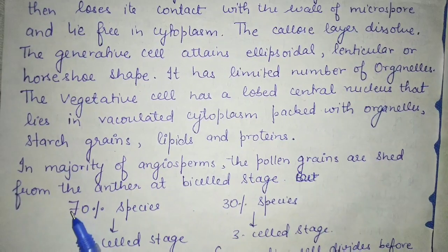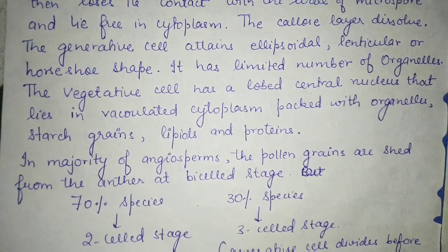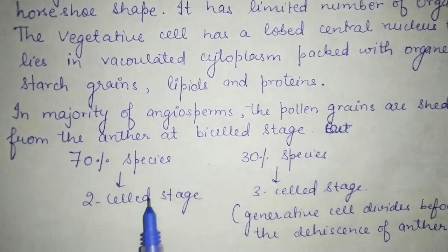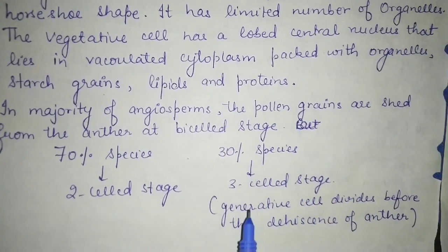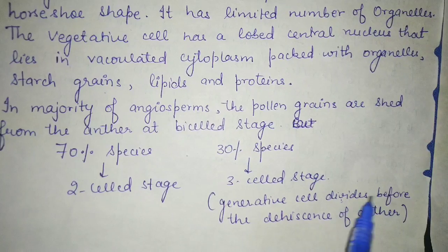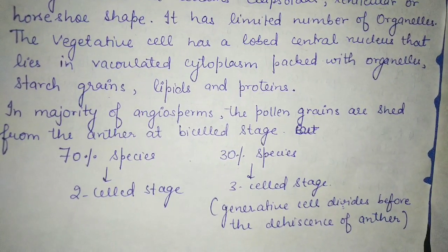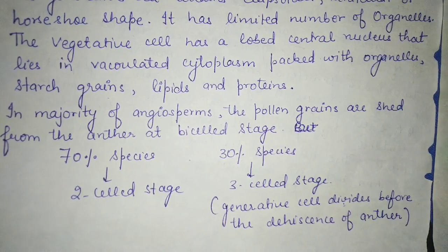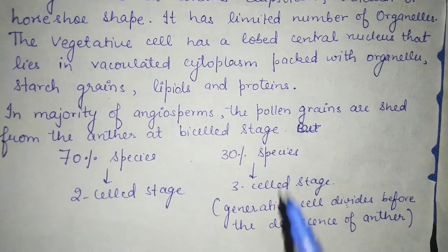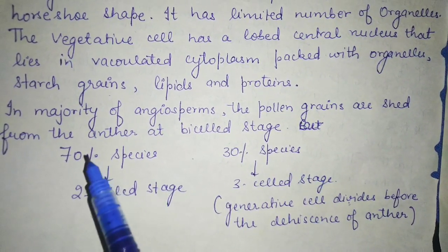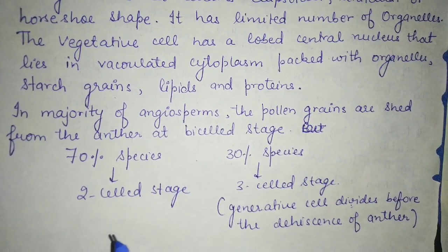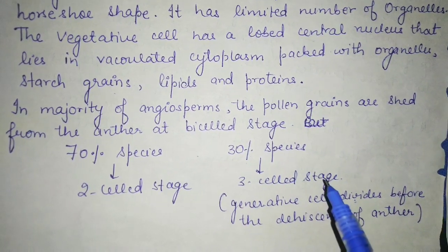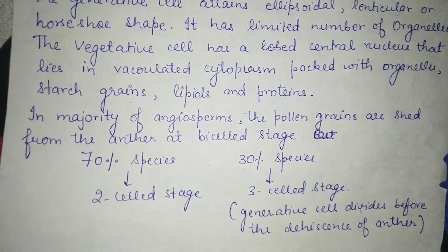In the majority of angiosperms, pollen grains are shed from the anther at the two-cell stage, meaning each pollen grain has one vegetative cell and one generative cell. This is the two-cell stage. When the generative cell divides before anther dehiscence, it becomes the three-cell stage. About 70% of species shed pollen at the two-cell stage, while 30% shed at the three-cell stage.